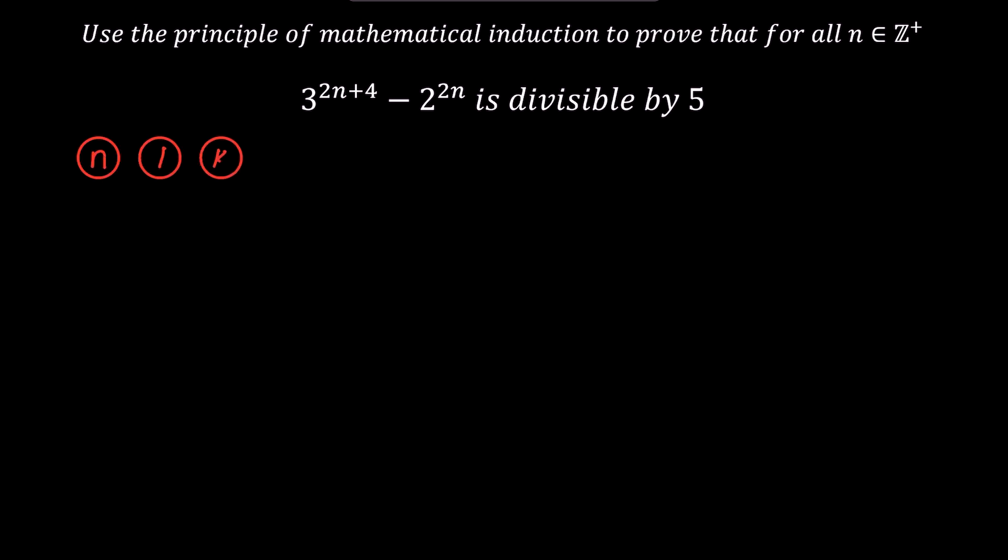We'll break down the problem using the five steps I introduced earlier: n, 1, k, k plus 1, and c. First, we give a name to the given problem as pn. So we'll say pn is 3 to the power of 2n plus 4 minus 2 to the power of 2n.